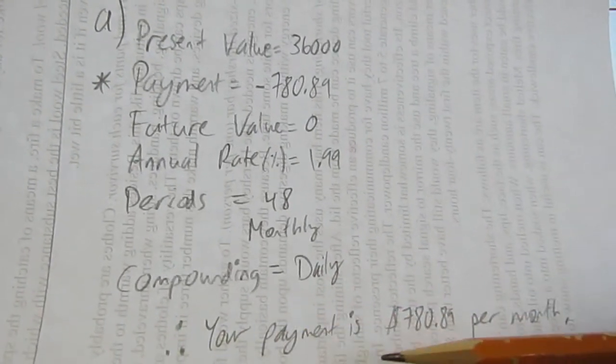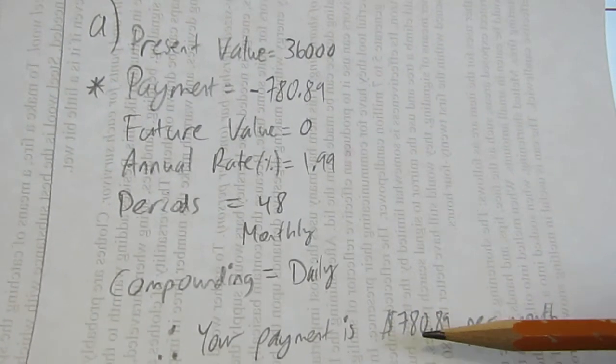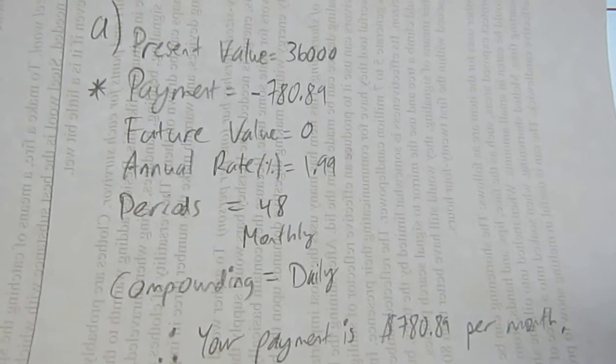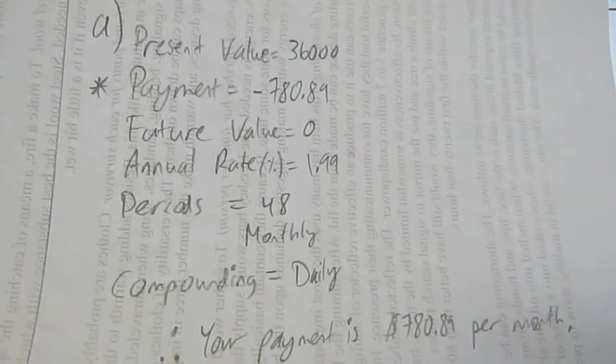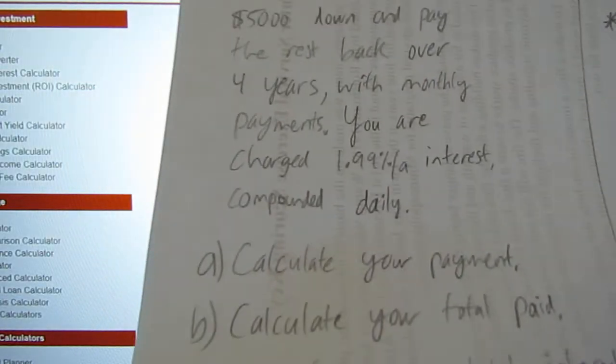A therefore statement for our final answer. And it's a dollar sign, there's our final answer. That's for the first part, which was just calculate. The first question just said, calculate your payment.